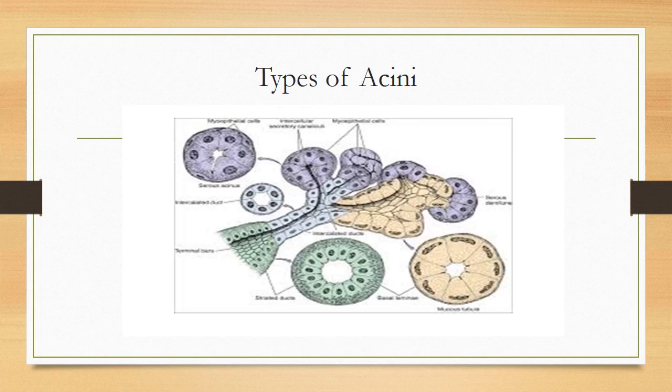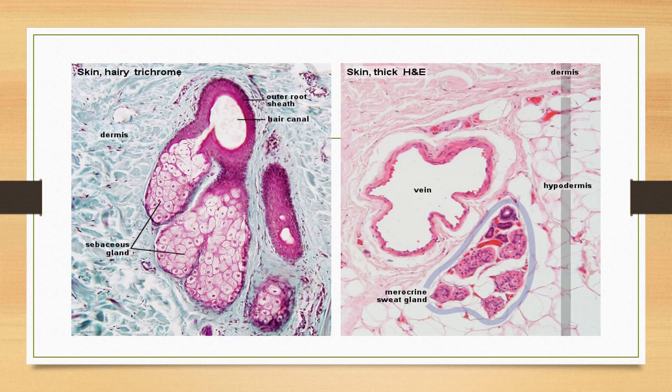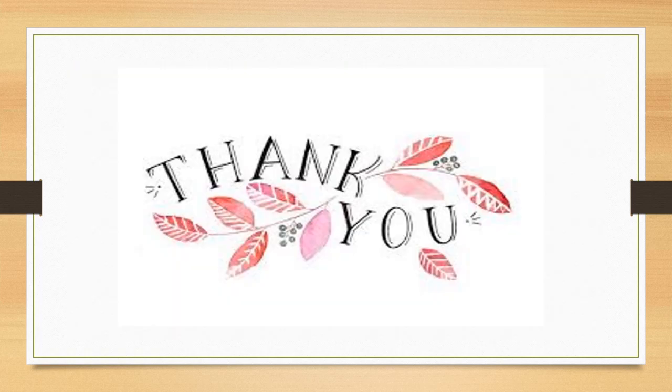An example of pure serous secretion is the parotid gland. Pure mucus secretion is exemplified by the sublingual glands. The mixed type with serous demilunes and mixed acini is the submandibular gland. Now you can see the photomicrograph of the sebaceous gland — identify what type it is, and also identify what type the myocrine sweat gland photomicrograph shows. Thank you.